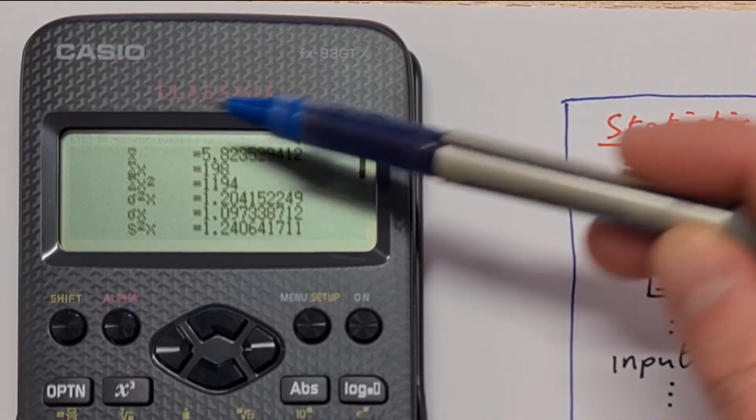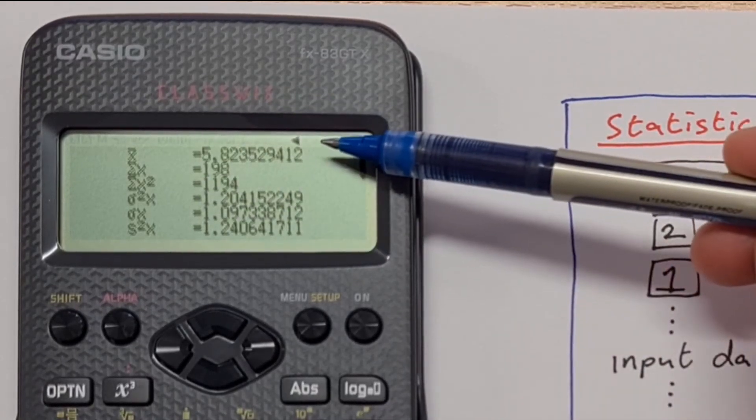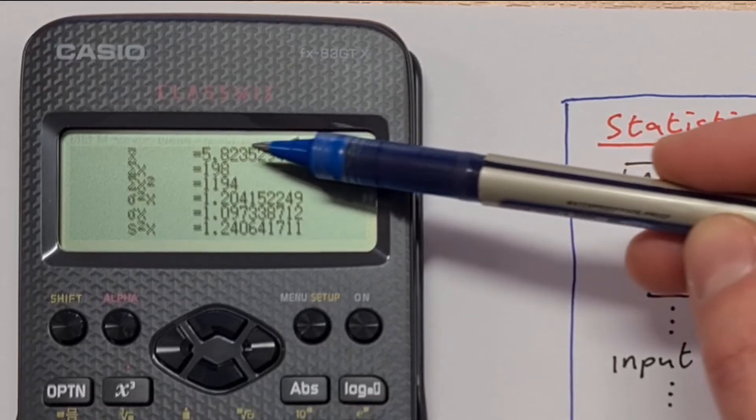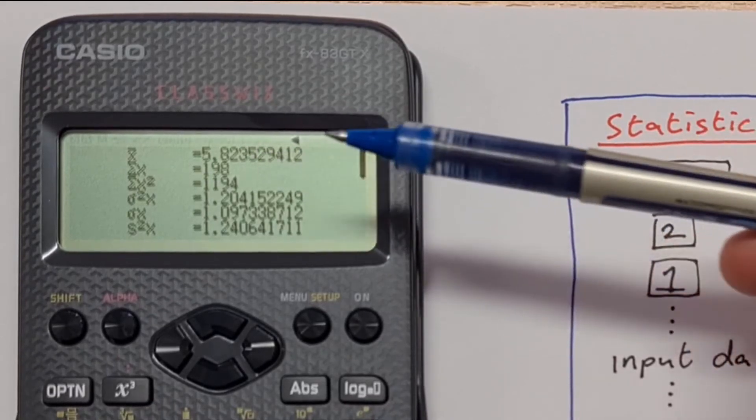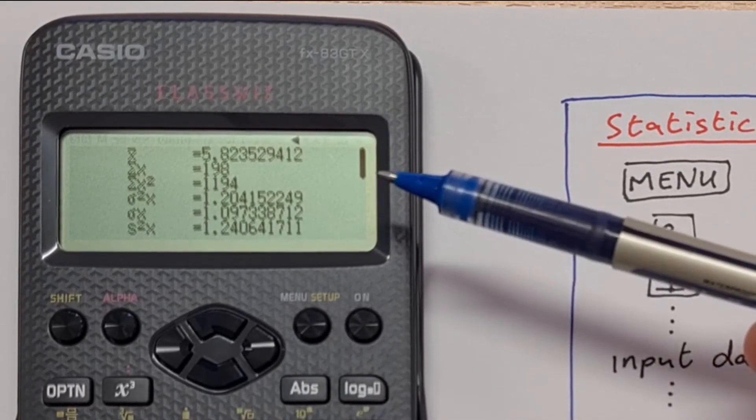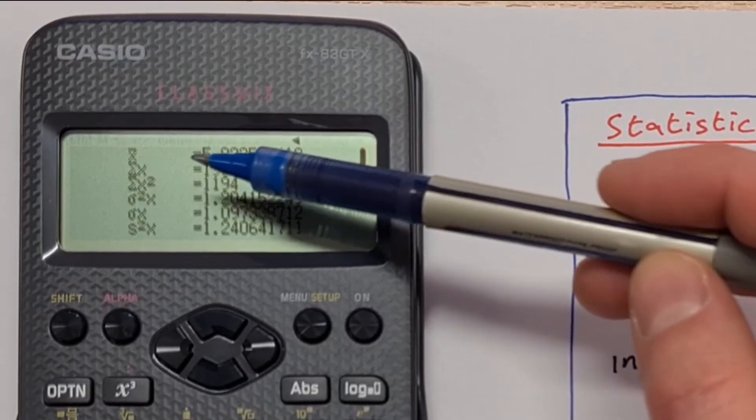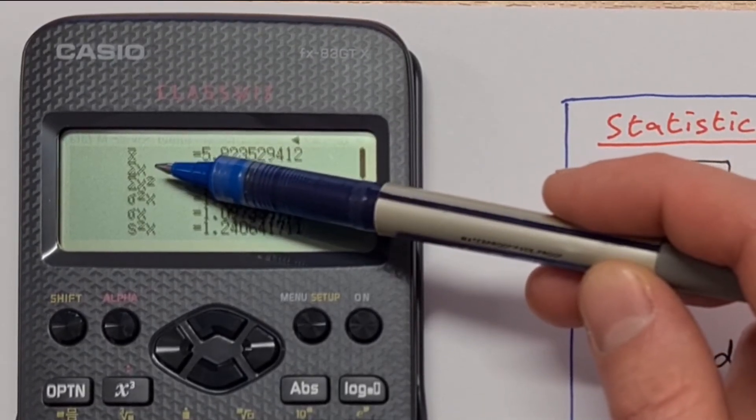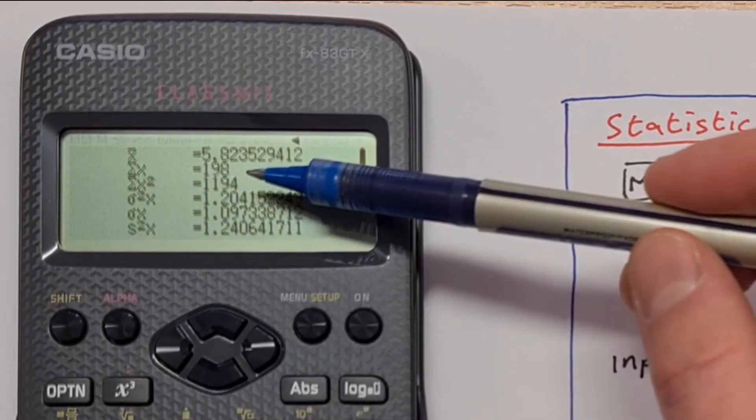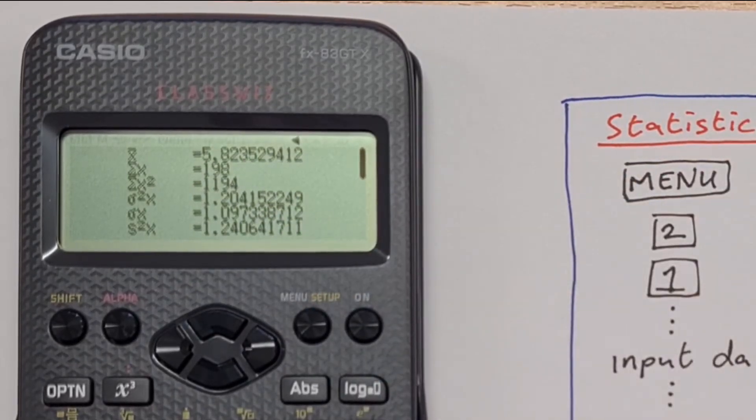So the first line here is x bar. That's our mean. So the mean of this data is 5.8235. The next one I have then is the sum of x. So the epsilon x is the total sum. That's 198. So in total all of those numbers add up to 198.